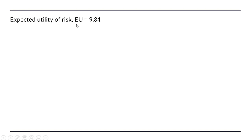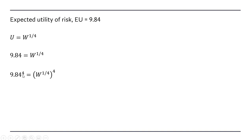The expected utility of the risk we found was 9.84. Here's our utility function. So to get the certainty equivalent, we're going to plug 9.84 in for u and solve for w. Raising both sides to the power of 4, the right-hand side would just be w. And 9.84 raised to the fourth power gives us $9,375.20.